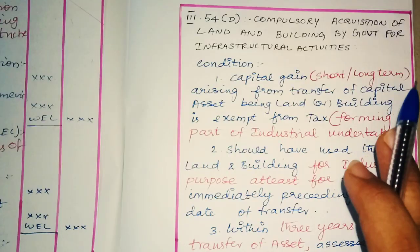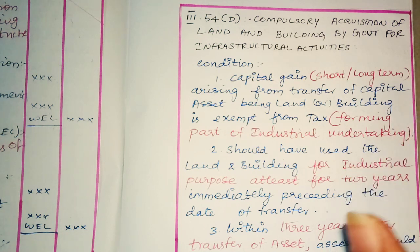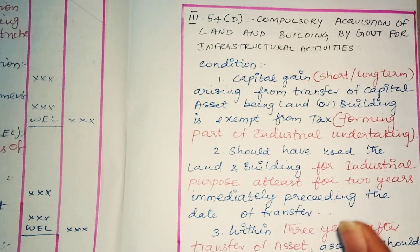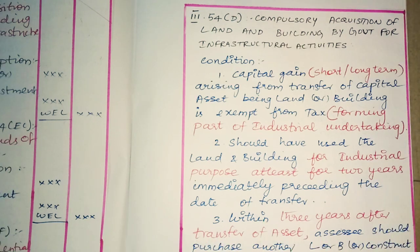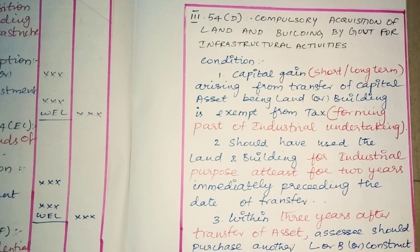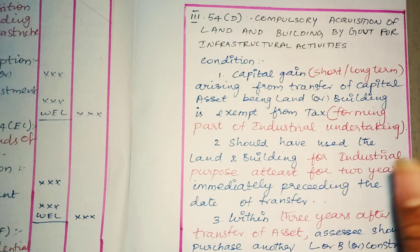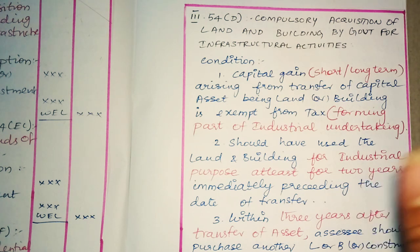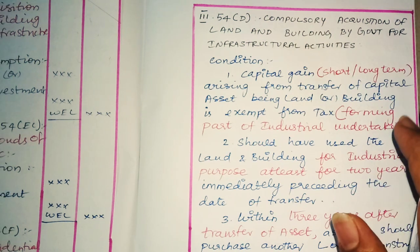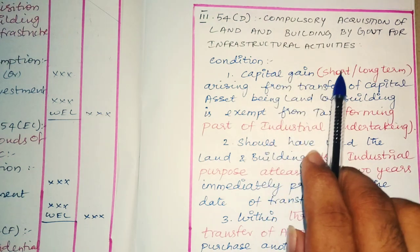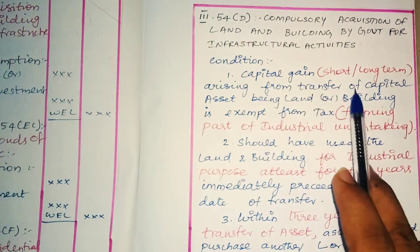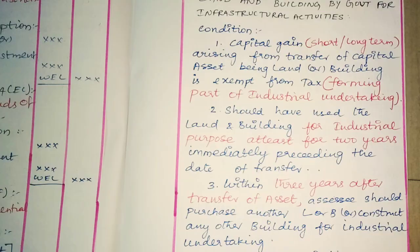Under Section 54D, the exemption applies for both short term and long term capital gains. Section 54 covers transfer of residential house property to house property, and applies for long term only. Section 54B covers transfer of land to land and applies for both short term and long term. Section 54D applies for both short term and long term capital assets, where the asset is compulsorily acquired by the government.